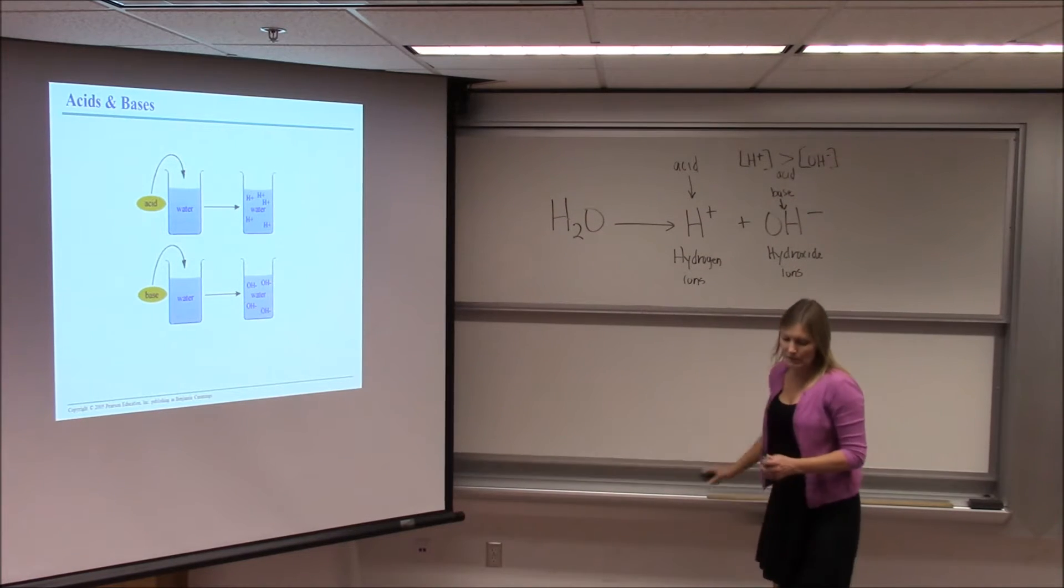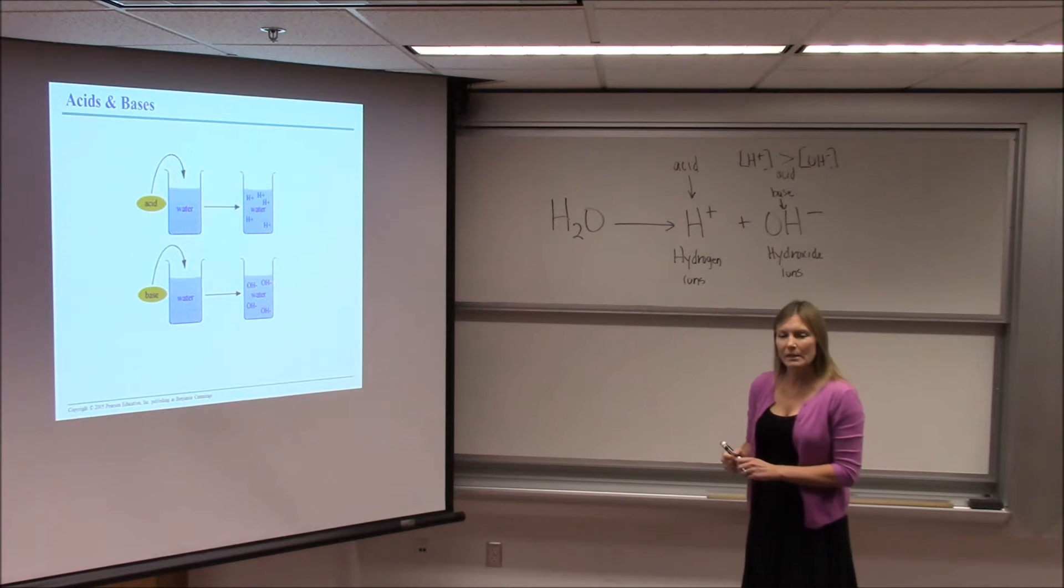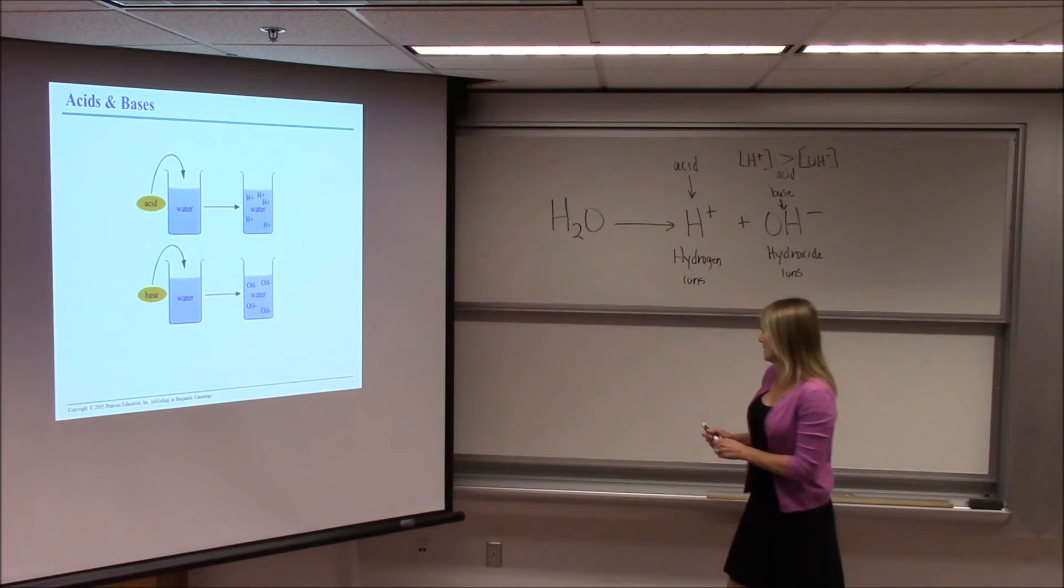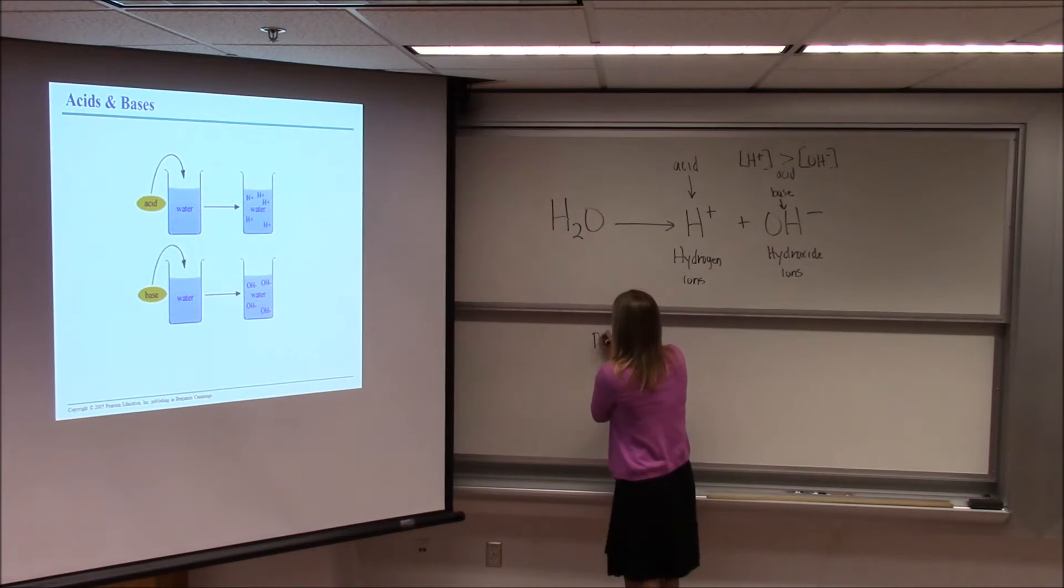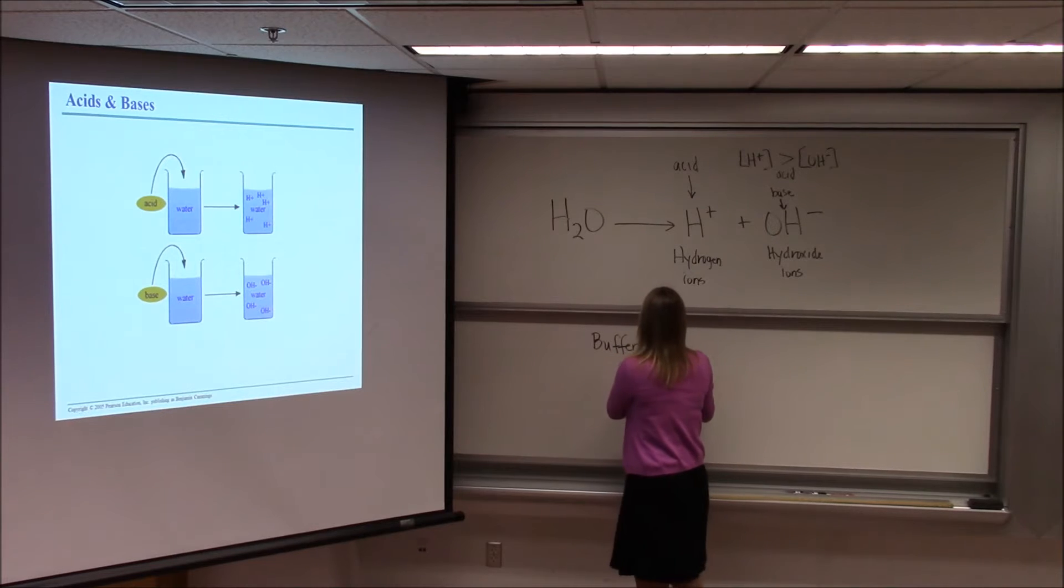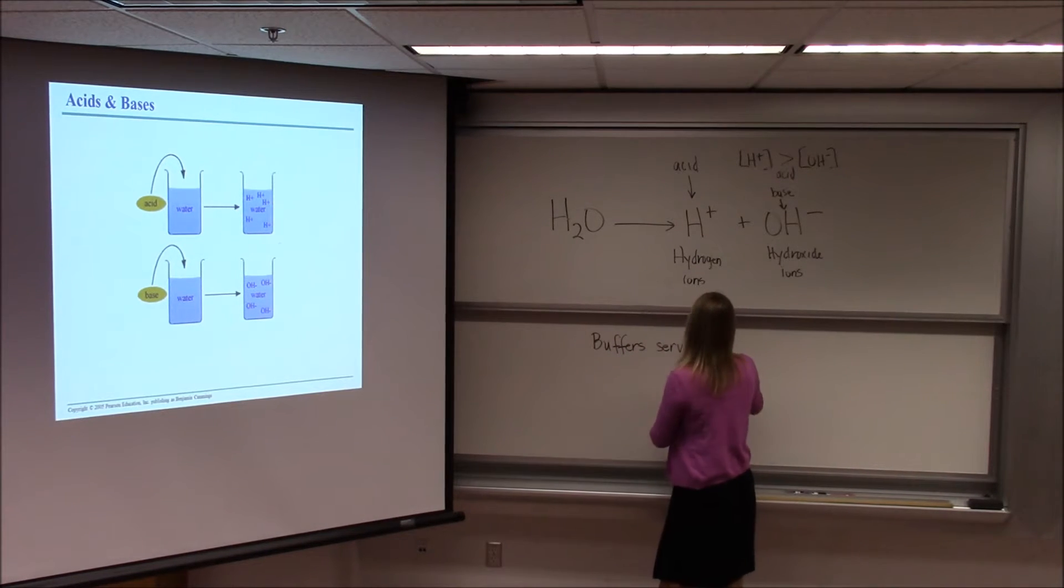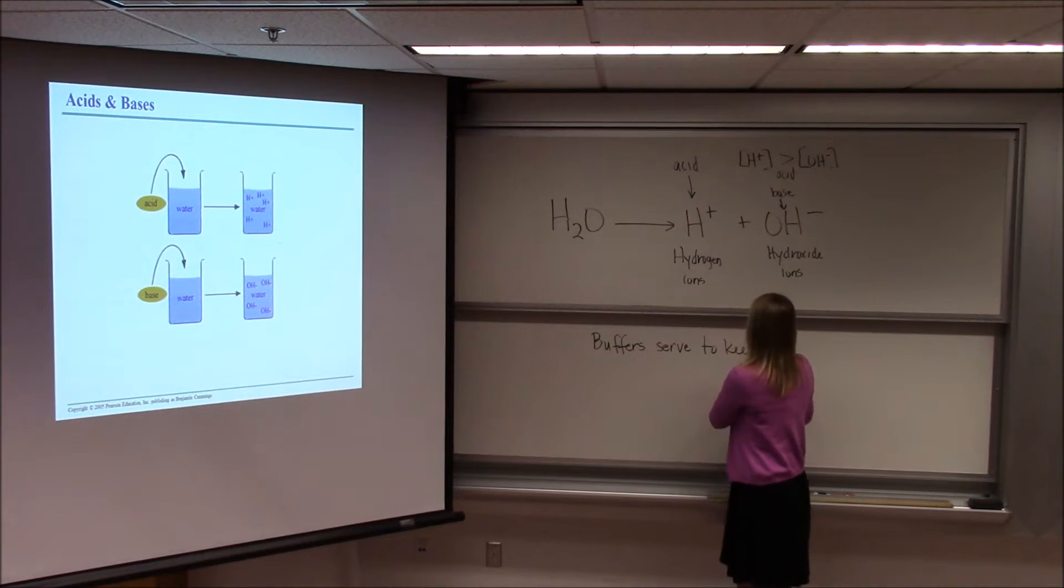And buffers serve to keep pH relatively constant for whatever the normal pH is in that environment. So buffers don't really serve to keep pH at 7, buffers serve to keep pH relatively constant.